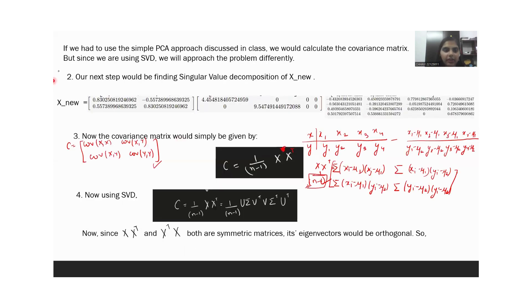So here we had the first vector is this and the second vector is this. Let's consider this is U1 and this is U2. These vectors U1 and U2 would be our PCs.